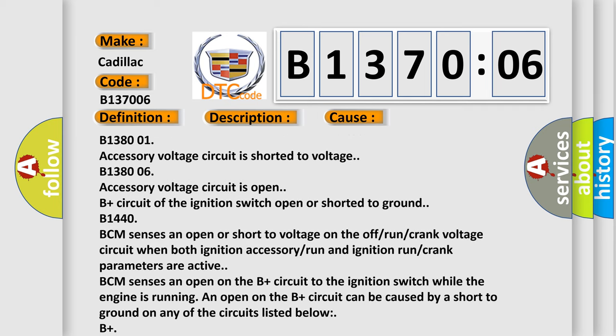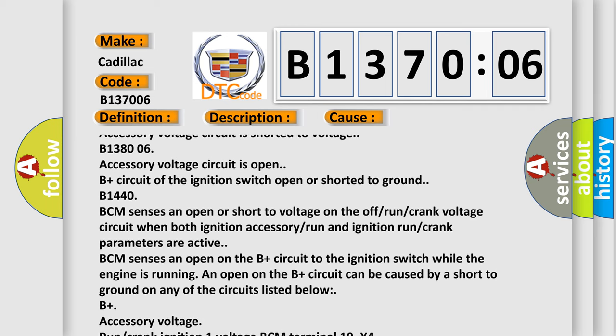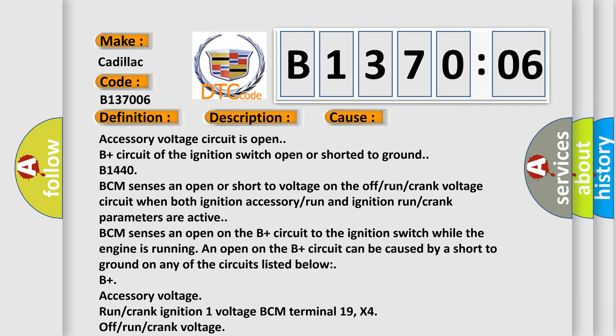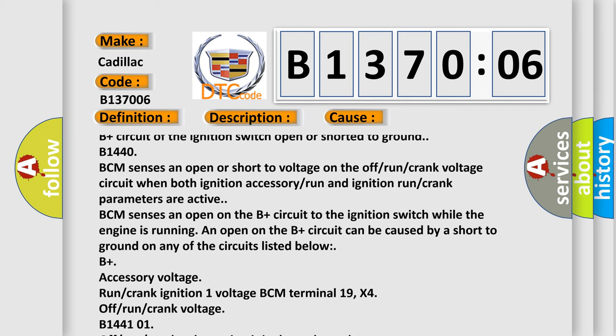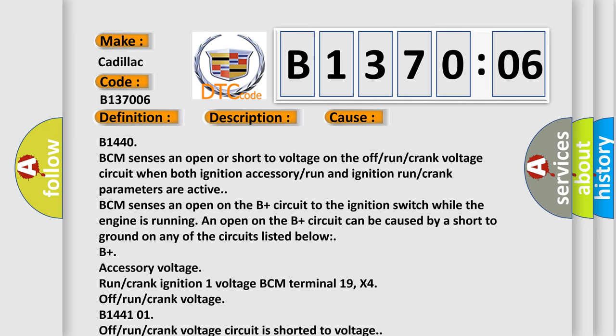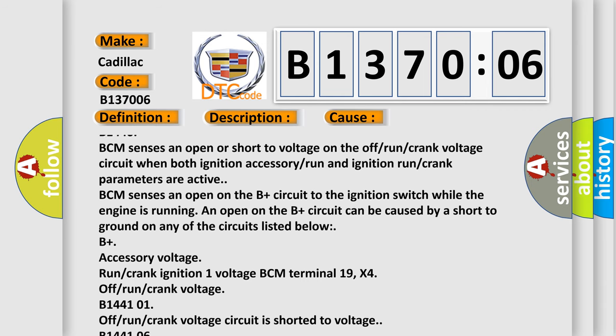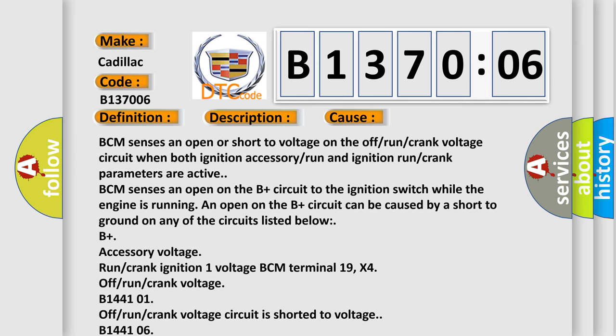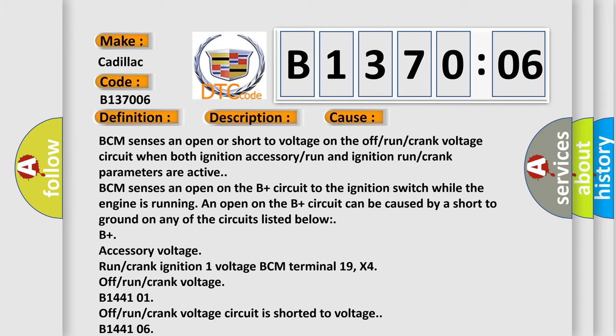B1440: BCM senses an open or short to voltage on the off-run-crank voltage circuit when both ignition accessory run and ignition run crank parameters are active. BCM senses an open on the B+ circuit to the ignition switch while the engine is running. An open on the B+ circuit can be caused by a short to ground on any of the circuits listed below: B+ accessory voltage, run crank ignition 1 voltage BCM terminal 19 X4, off-run-crank voltage. B144101: off-run-crank voltage circuit is shorted to voltage. B144106: off-run-crank voltage circuit is open. Algorithm-based failure: this subtype is used for algorithm-based failures that cannot be assigned to a specific subtype.